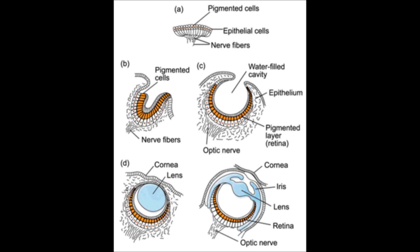The hyaloid artery enters the optic cup through the embryonic fissure and grows forwards to meet the lens, bringing temporary nourishment to the developing structures before it eventually atrophies and disappears. As it does so, its place is taken by a clear jelly, the vitreous, largely secreted by the surrounding neural ectoderm.